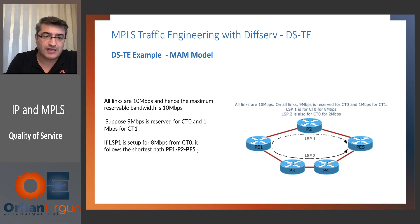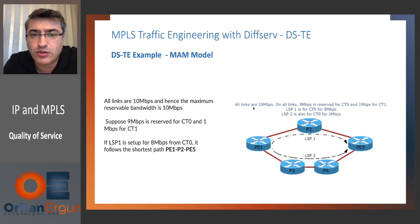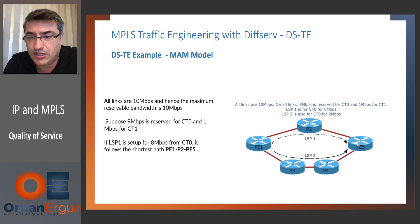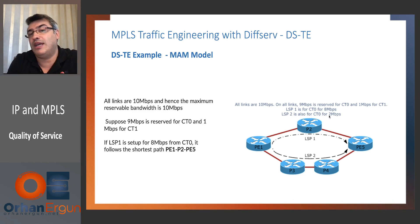Now let's go through this example. 8 MB for LSP1 CT0 will follow the shortest path because we have the capacity on it. All links are at 10 MB. On all links, 9 MB is reserved for CT0 and 1 MB for CT1. LSP1 is for CT0 at 8 MB. LSP2 is also for CT0 for 2 MB.